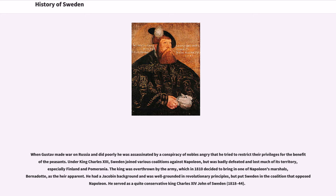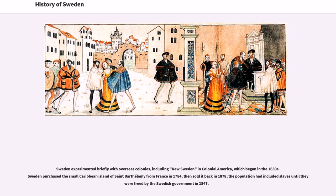He served as the quite conservative King Charles XIV John of Sweden. Sweden experimented briefly with overseas colonies, including New Sweden in Colonial America, which began in the 1630s. Sweden purchased the small Caribbean island of St. Bartholomew from France in 1784, then sold it back in 1878.